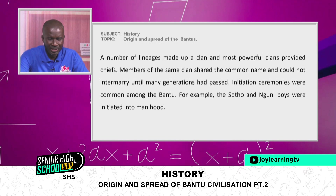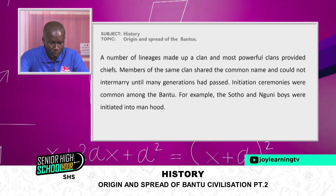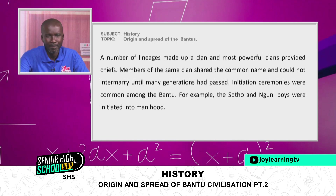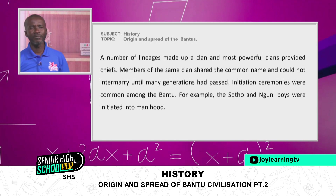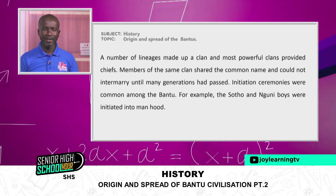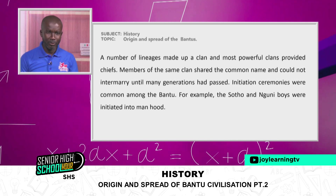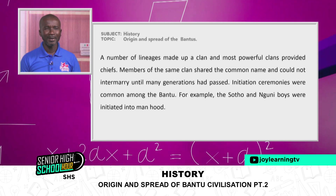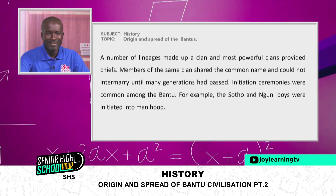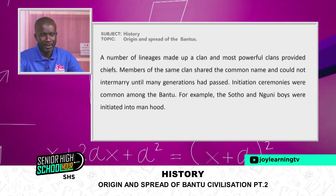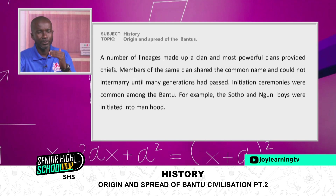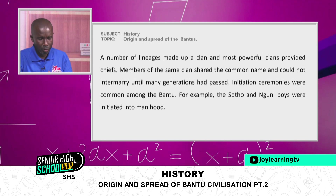The most powerful clans provided chiefs. Members of the same clan shared a common name and could not intermarry until many generations had passed — the same practice in the clans we have in Ghana. From of old, people belonging to the same clan were not supposed to marry. If you belonged to the same clan, you were deemed to be one, and so you could not marry.